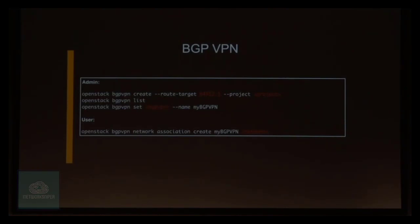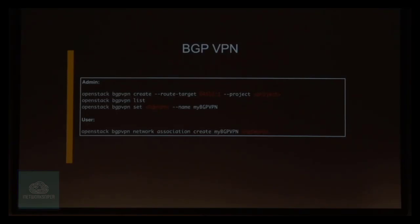If you have that infrastructure, you simply set up and configure the right route targets, connect it to a project, set a name for it, and then the user can associate networks to that already-set-up BGP VPN that you created as an admin.